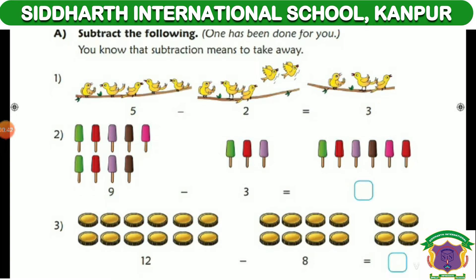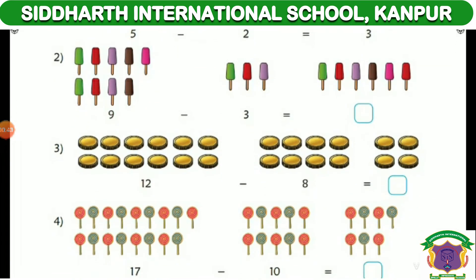In this way, you have 12 eggs, take away 8 eggs. So how much is left? Count 1, 2, 3, 4. Right, here is 4.